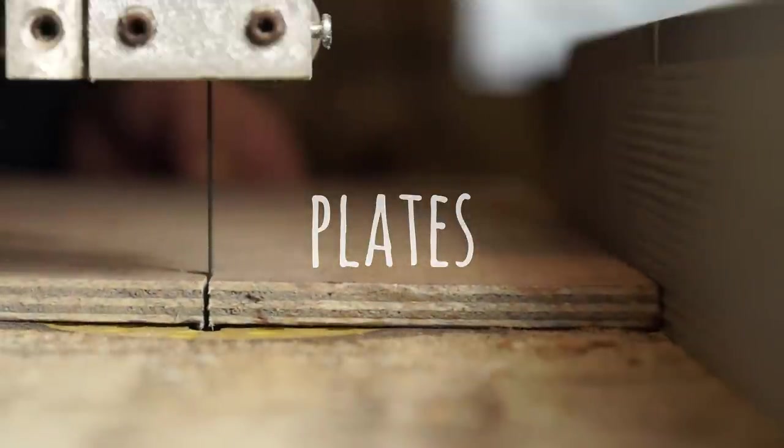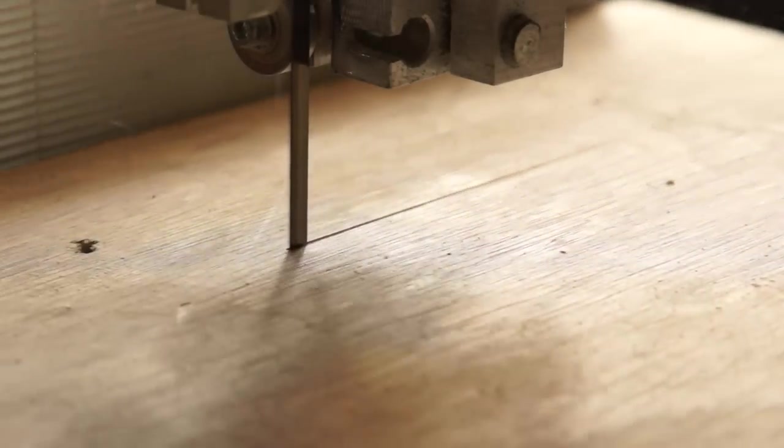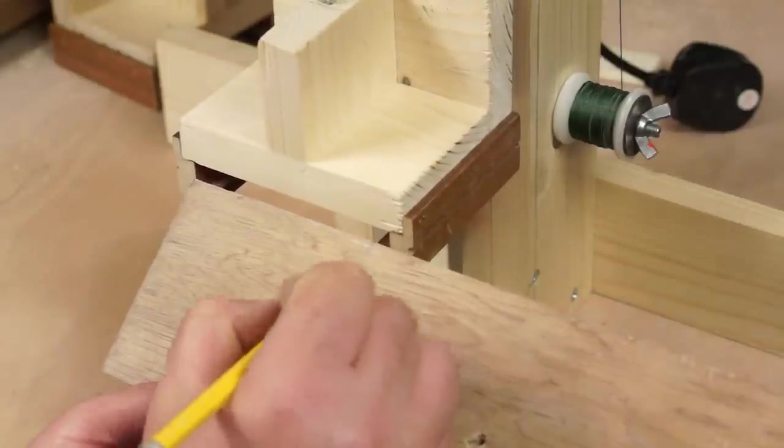To make the plates that hold the floats I'm cutting down some strips of 3/8 plywood to the same depth as the head. These can be marked to fit loosely into the shelf and then cut to length.